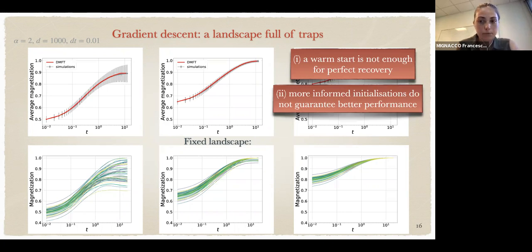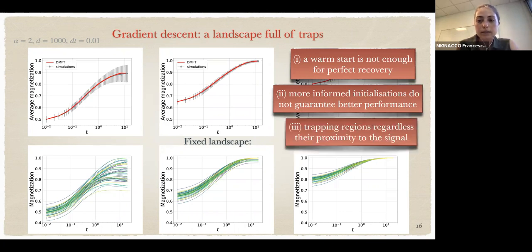We see that more informed initializations do not guarantee better performance. Also, some regions can be trapping even if they're very close to the signal. For instance, if we look at the bottom right figure, we have that all simulations starting at initial magnetization 0.8 achieve perfect recovery. While if we achieve magnetization 0.8 dynamically, we see in the left and central plots that many realizations can still get stuck below perfect recovery. This was a bit surprising.